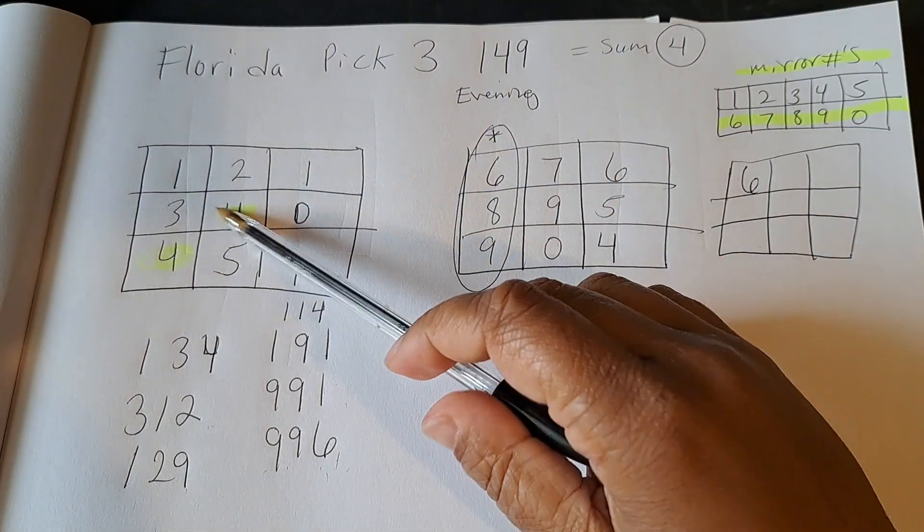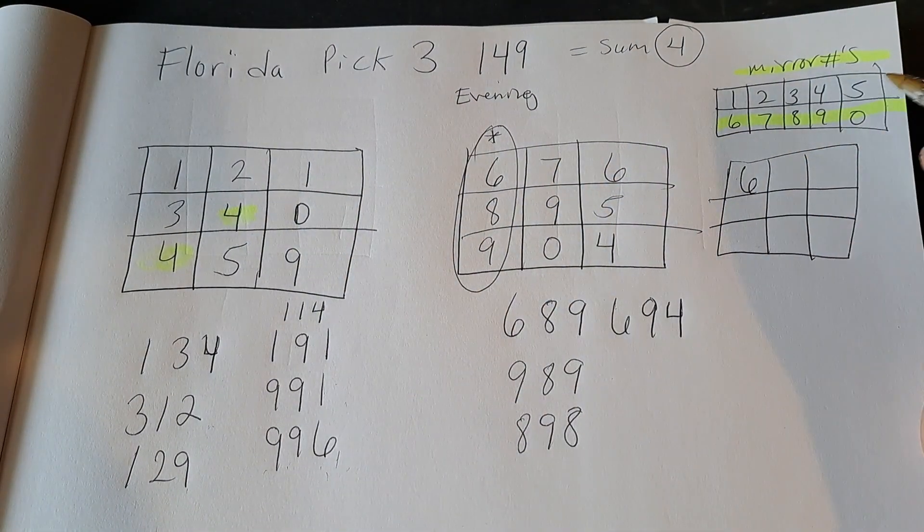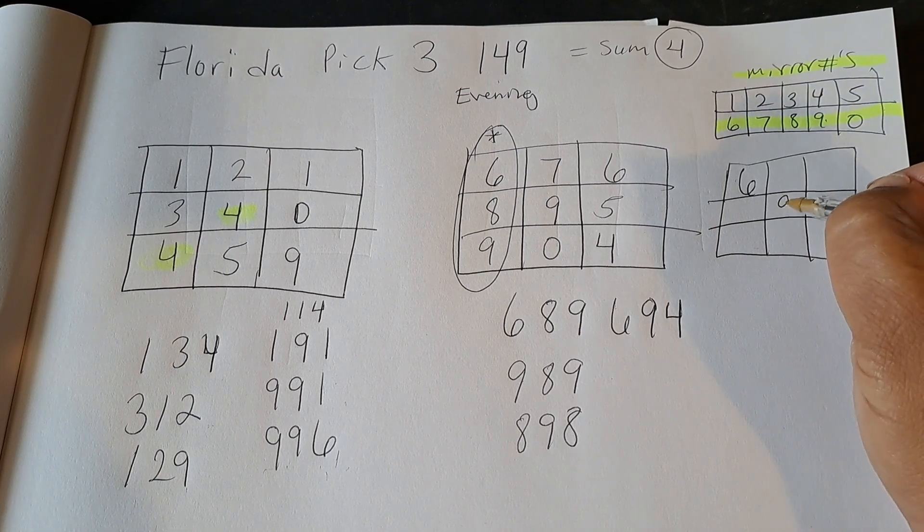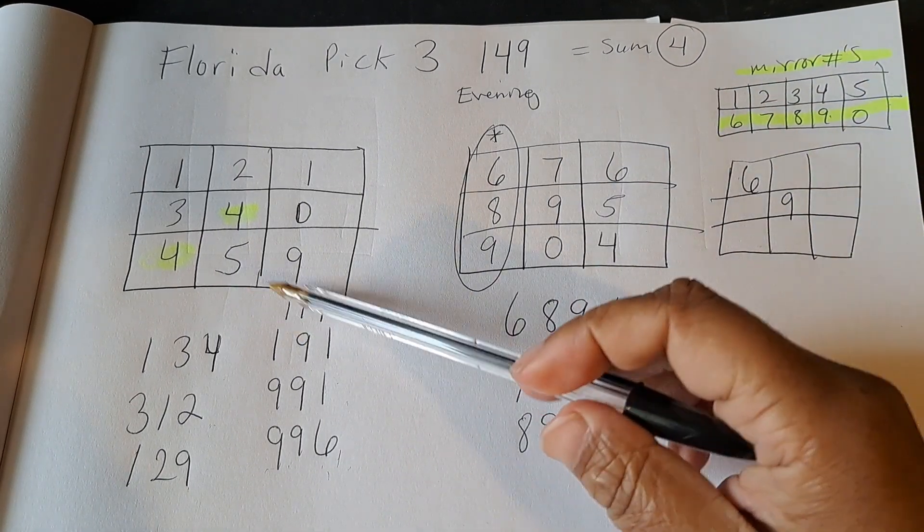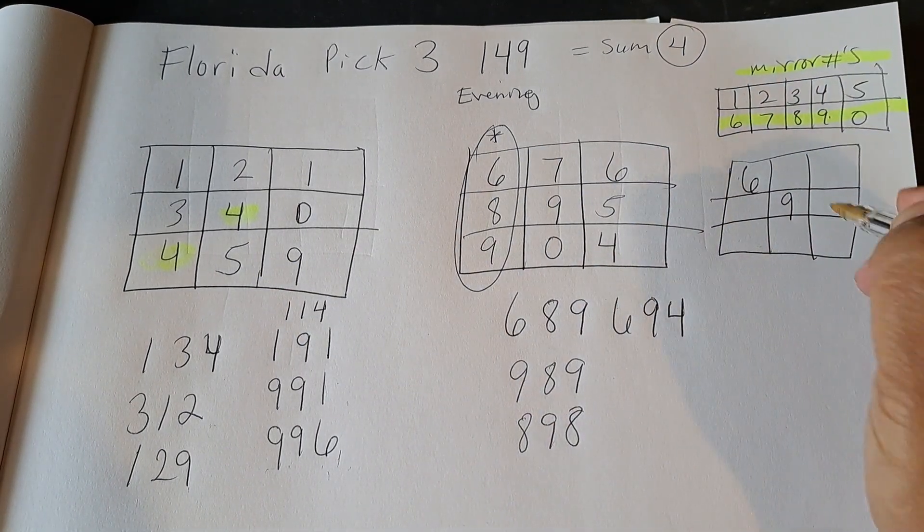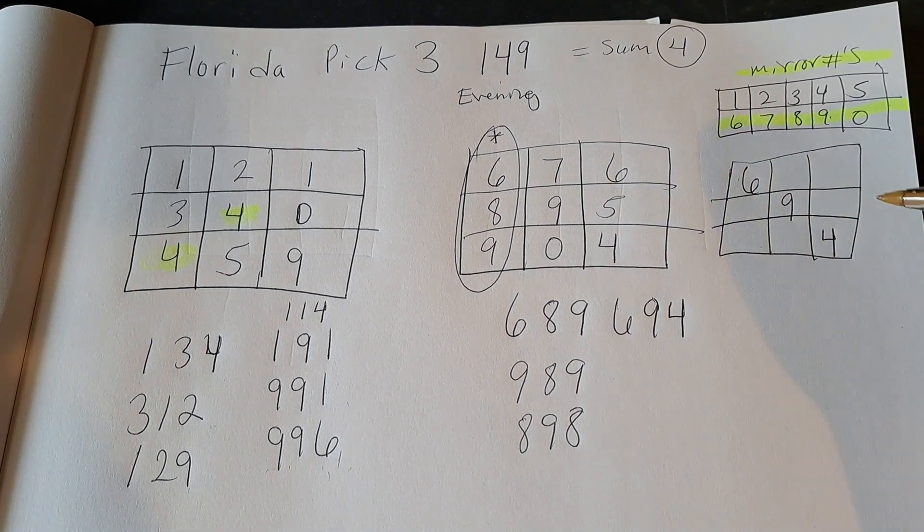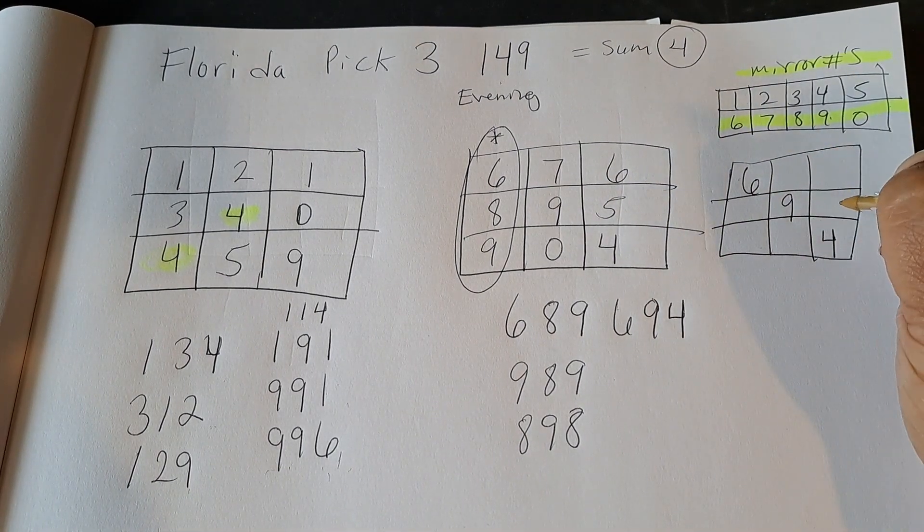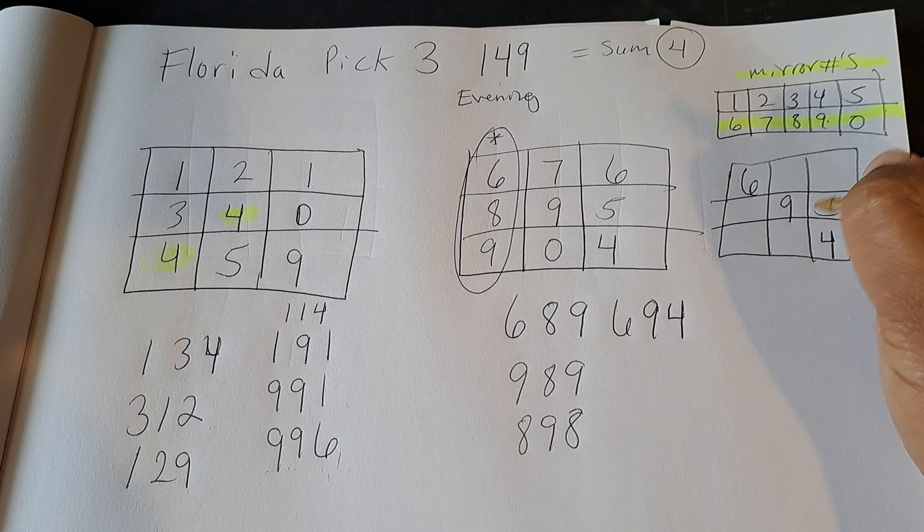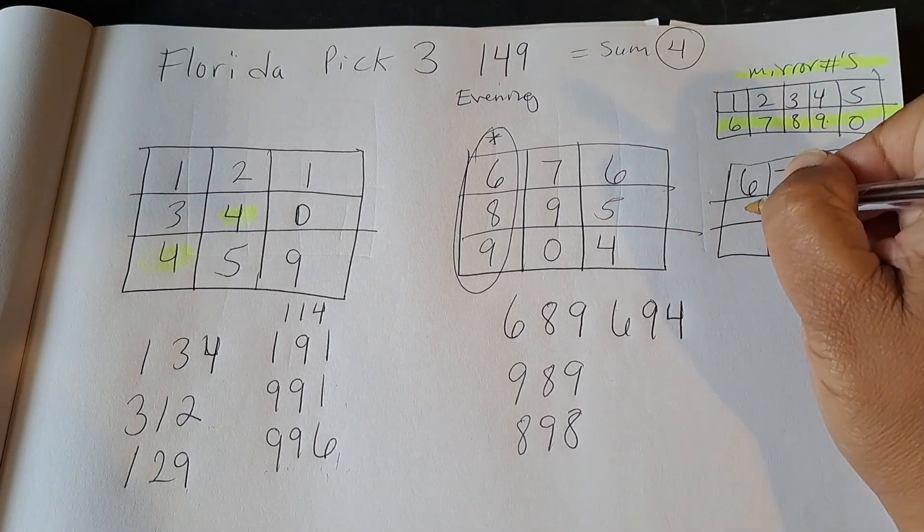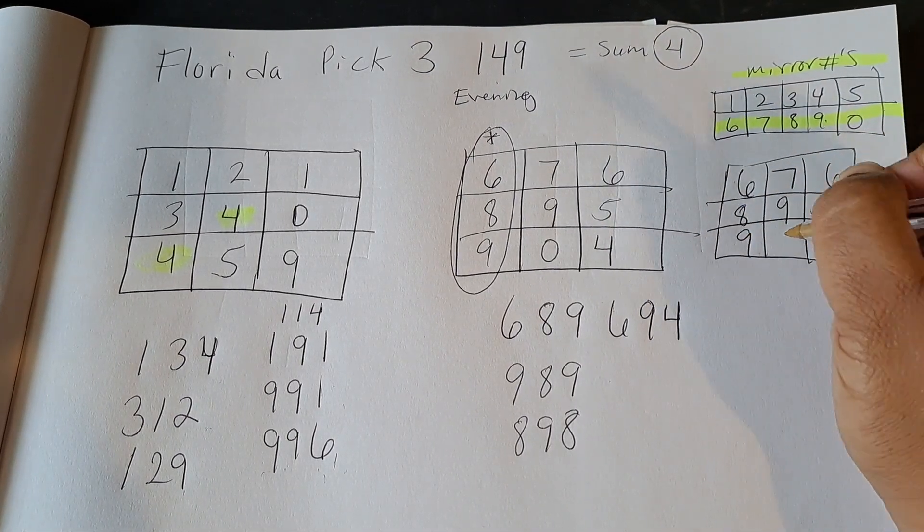The mirror number of the number 4 is 9. See 4 is 9. And the mirror number of the number 9 is the reverse 4. And then you add 1 all the way around. So 4, 5, 6, 7, 8, 9, 10.